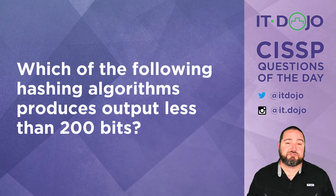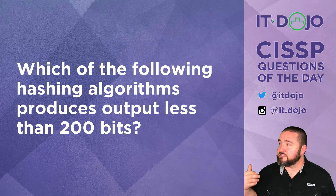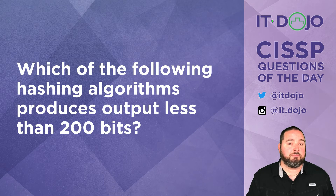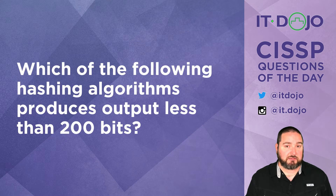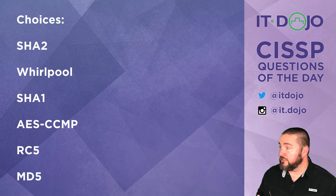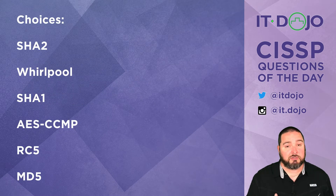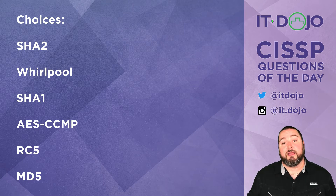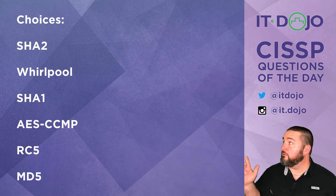Question number two: which of these algorithms produces a hash output that is less than 200 bits in length? Go ahead and click pause if you need some contemplation time. When you're ready, click play and we can break each one down.